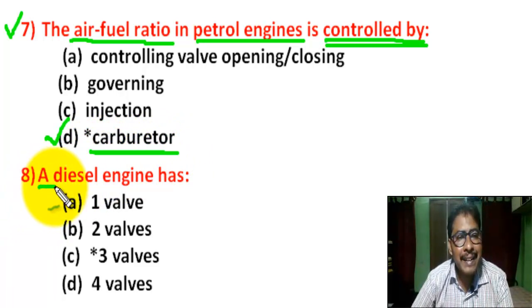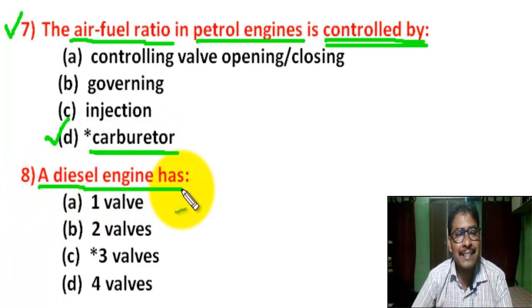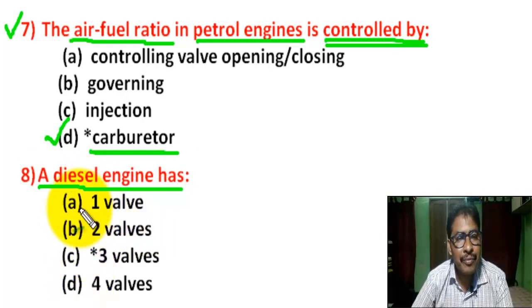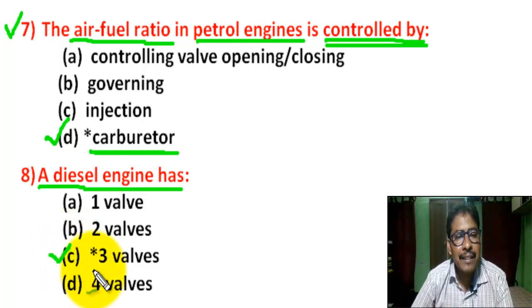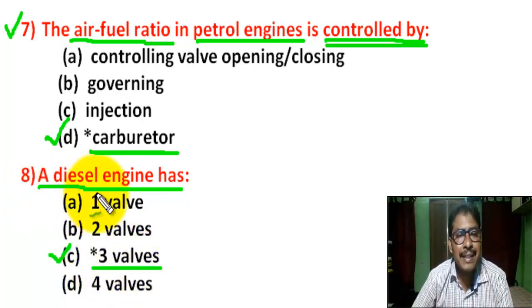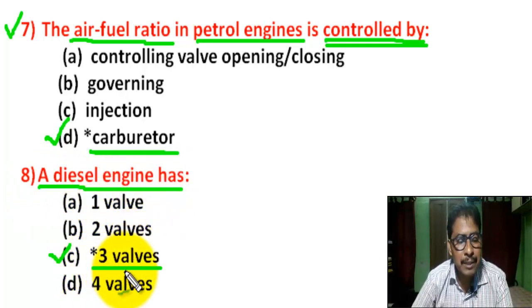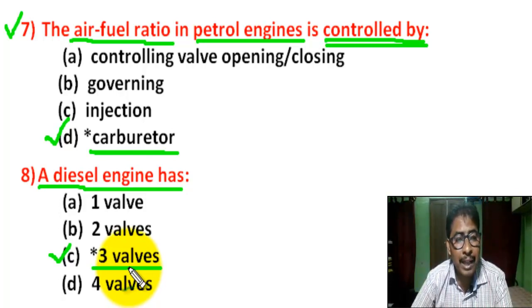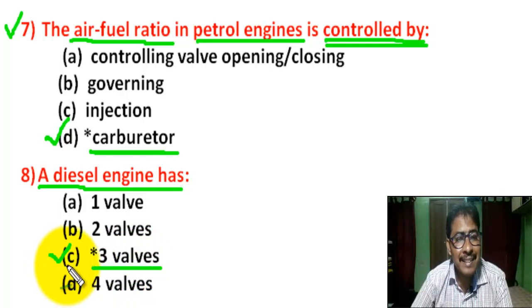Question number 8: A diesel engine has — there are four options. Correct answer is C — three valves. A diesel engine has three valves: inlet valve, exhaust valve, and fuel injector valve.